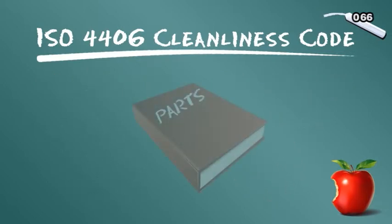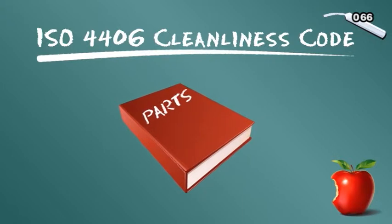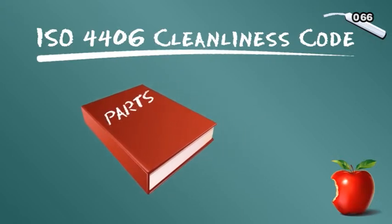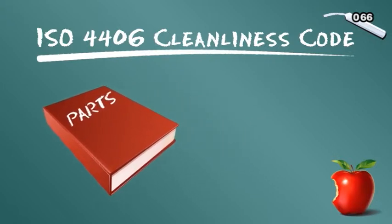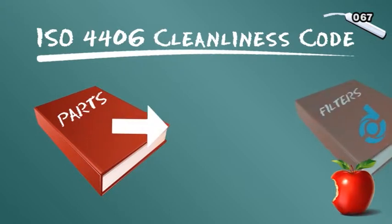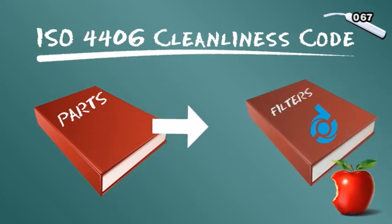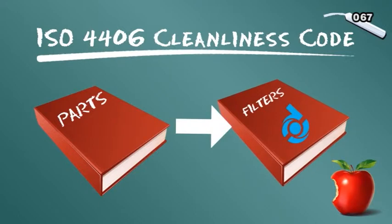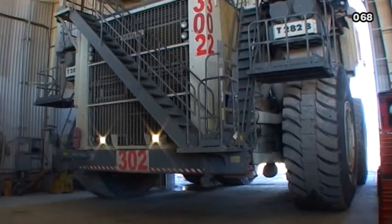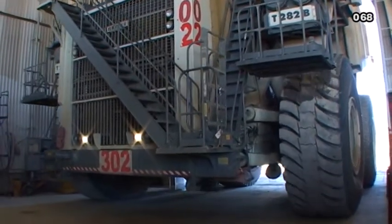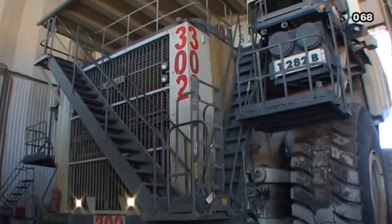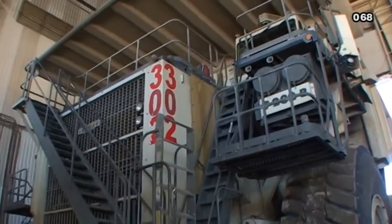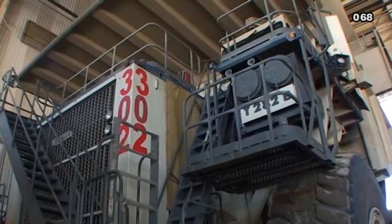Most component manufacturers specify filtration level recommendations using the ISO code. This code will help you select the filters with the right Donaldson media to meet manufacturer specifications. There's more to know, however, about contaminants which destroy hydraulic components and bring some of the world's largest vehicles and machinery to a halt.